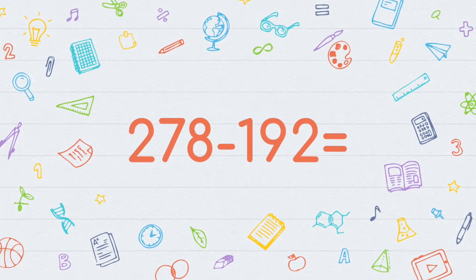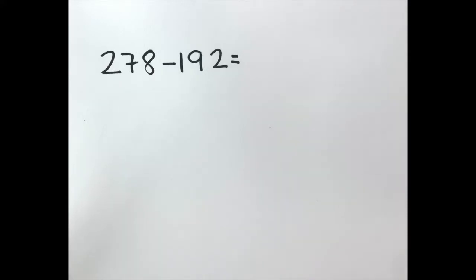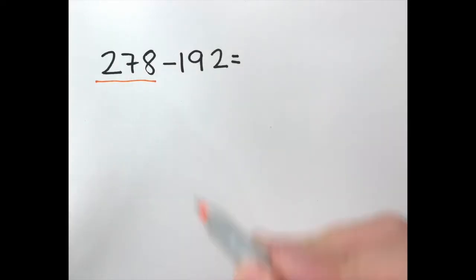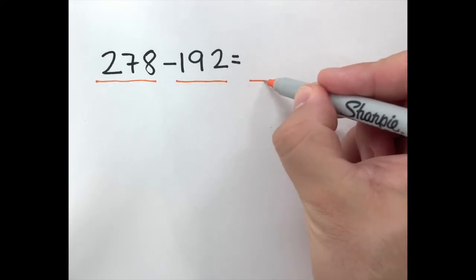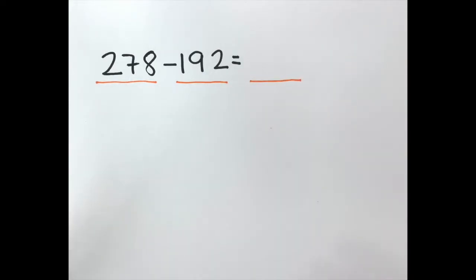Did you find the same answer? I hope so, and if you didn't, that's okay — we're going to have other chances to practice. Just remember all the rules for addition. Now it's time to practice subtraction, and heads up: you are going to have to regroup again. This is the subtraction equation — go ahead, pause the video and try to answer it by yourself. I have two numbers: 278 minus 192, and I'm looking for the difference, the answer to the subtraction problem.